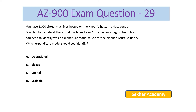AZ-900 Exam Question number 29. You have 1,000 virtual machines hosted on a Hyper-V host in a data center. You plan to migrate all virtual machines to an Azure pay-as-you-go subscription. You need to identify which expenditure model to use for the planned Azure solution. The options are: A) Operational, B) Elastic, C) Capital, D) Scalable. Since the subscription model is pay-as-you-go, the operational expenditure model supports it. The right answer is A, operational.